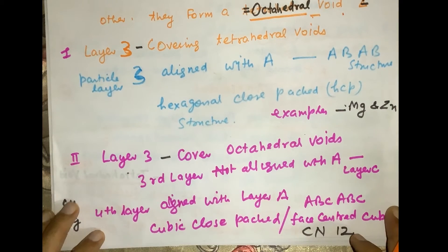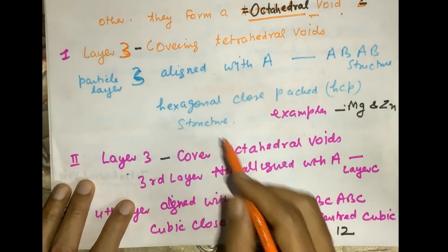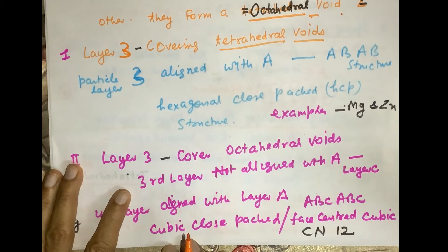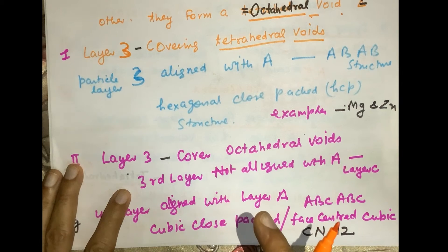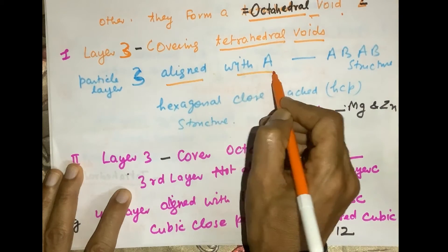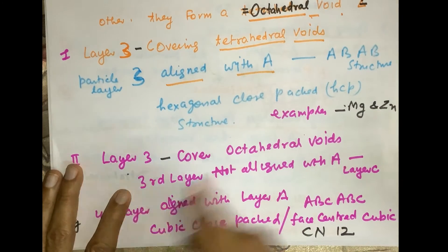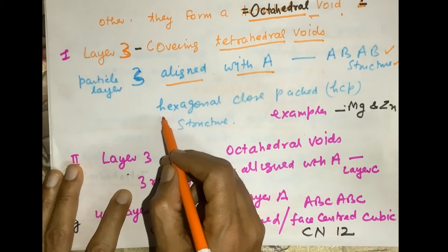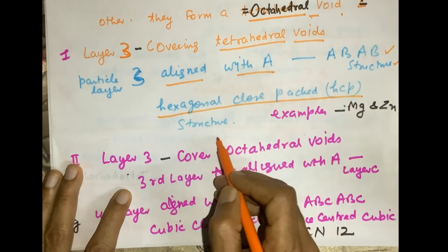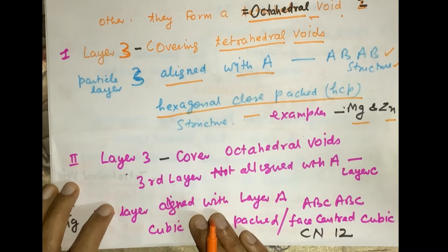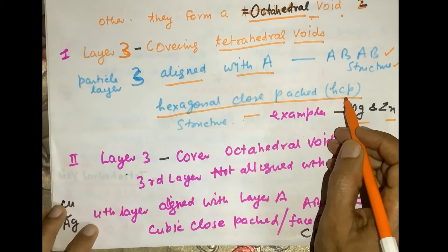Now, placing the third layer, there are two options. The third layer may cover the tetrahedral voids of layers A and B. If the tetrahedral void is covered by the third layer, then the third layer aligns with the particles of layer A, and we say this is an ABAB structure. This is also called the hexagonal close packed, or HCP, structure. Examples are magnesium and zinc.